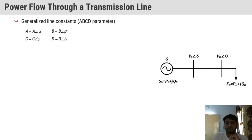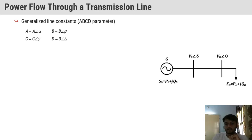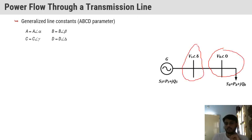We are observing an actual power system in which we have a generator which is the source side SS, which contains PS plus jQS, where PS is active power and QS is the reactive component of power. Then we have VS at delta, which is the sending end voltage and angle. This is the sending end bus bar and this is the receiving end bus bar. Then we have a load, which is any type that consumes apparent power SR equal to PR plus jQR.